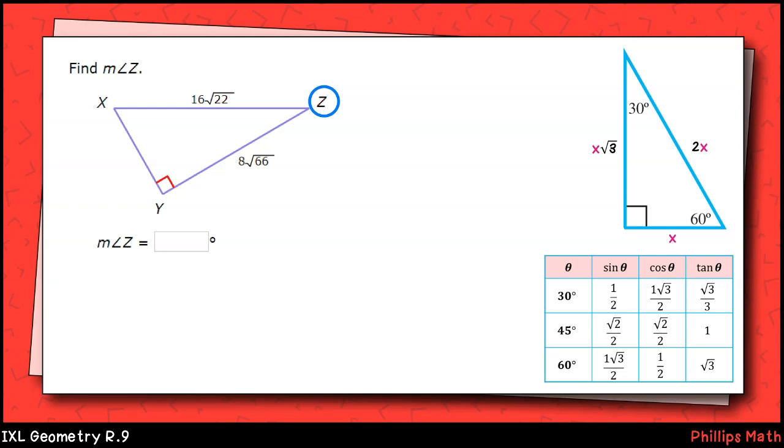This first one asks us to find the measure of angle z. Notice that I've included some reference figures over here on the right. I also circled angle z, which is our target. We are given the side adjacent to z and the hypotenuse of the right triangle. So right away, I'm thinking about the cosine function. I could set it up something like this. Cosine of angle z is 8 square roots of 66 over 16 square roots of 22. Let's simplify that right side. We can divide the non-radical factors 8 and 16. That simplifies to 1 half. Then we can divide the radicands, and that leaves the square root of 3 in the numerator.